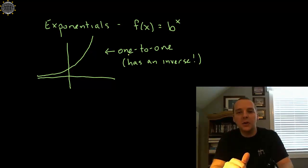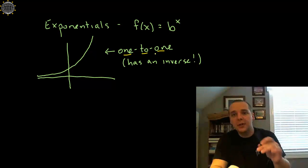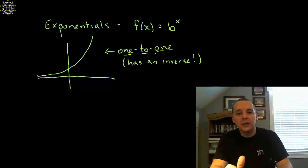Exponential functions are one-to-one. That's a special property that says that they pass the vertical line test, which makes them functions, but they also pass the horizontal line test, which makes them invertible functions. So because this passes the vertical line test and the horizontal line test, this guy is going to have an inverse. So that's a great property about exponential functions. This guy does have an inverse.